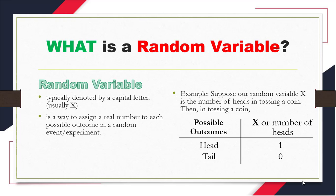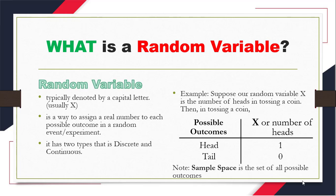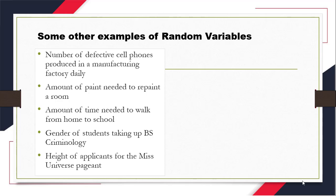Please take note that the set or list of all possible outcomes is what we call the sample space. Moreover, a random variable has two types: discrete and continuous. Now, to know more about random variables, I have here some other examples of random variable.